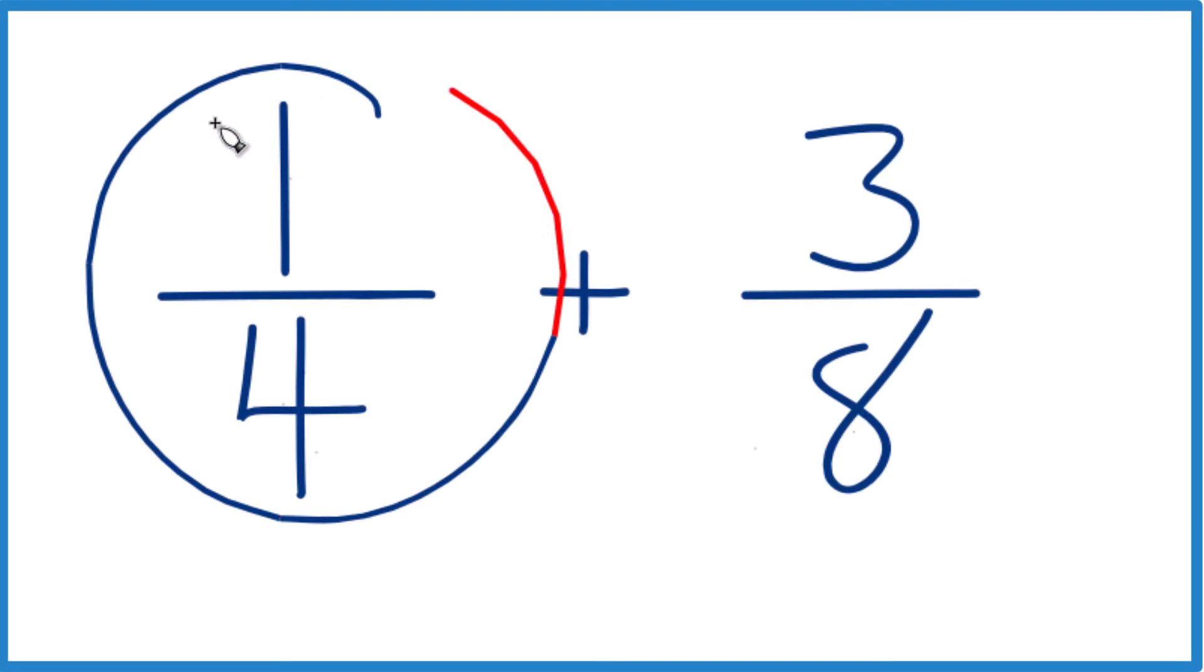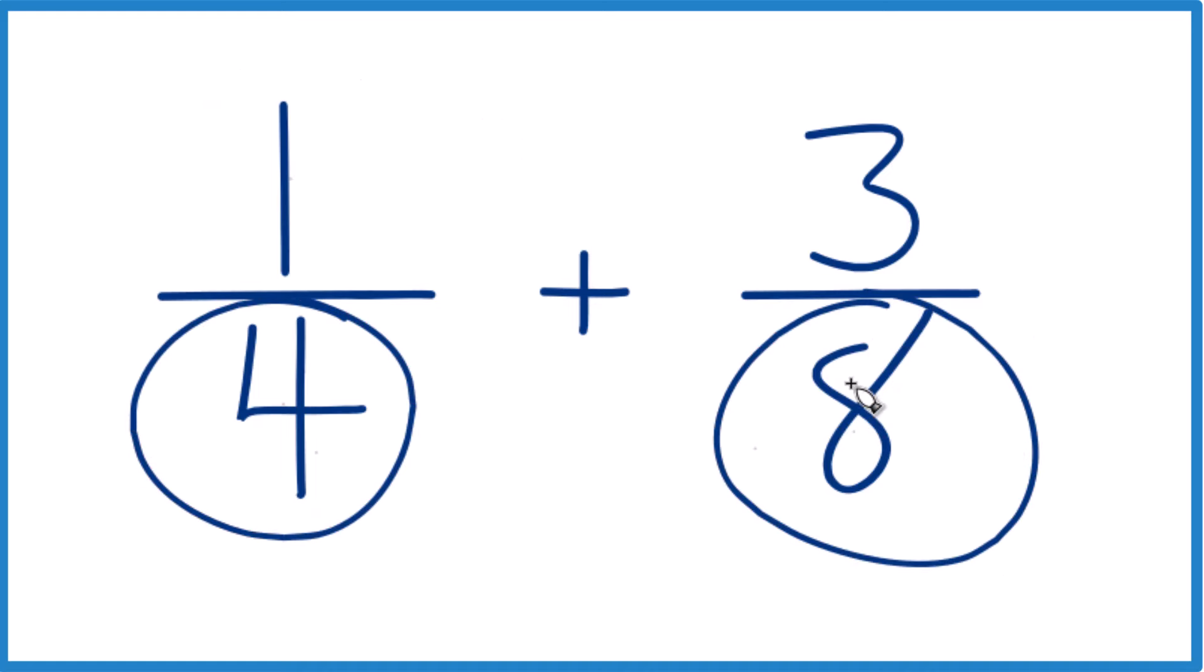Let's add the fractions 1 4th and 3 8ths. So, first off, we need to get this denominator here to be the same. We need a common denominator.